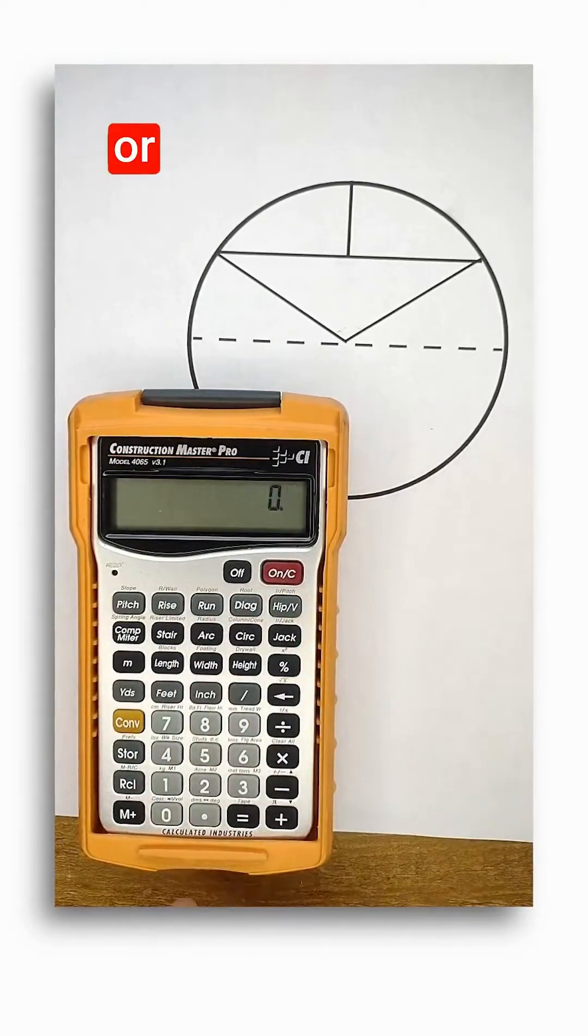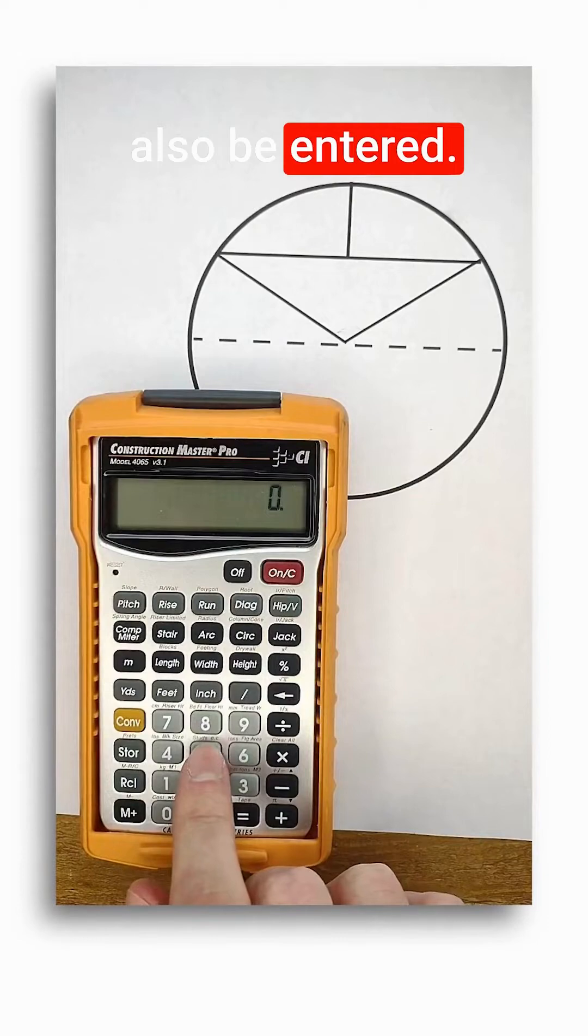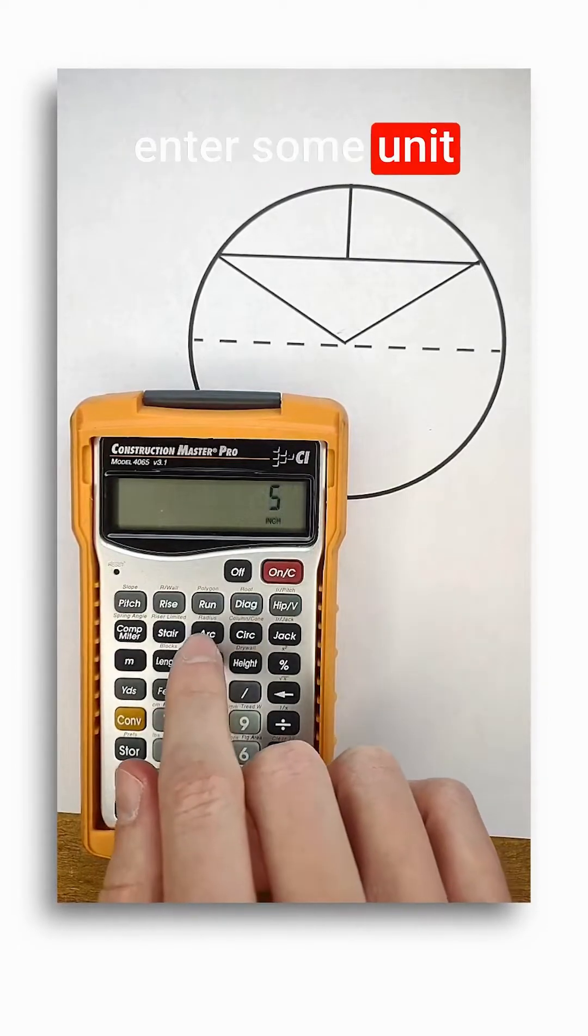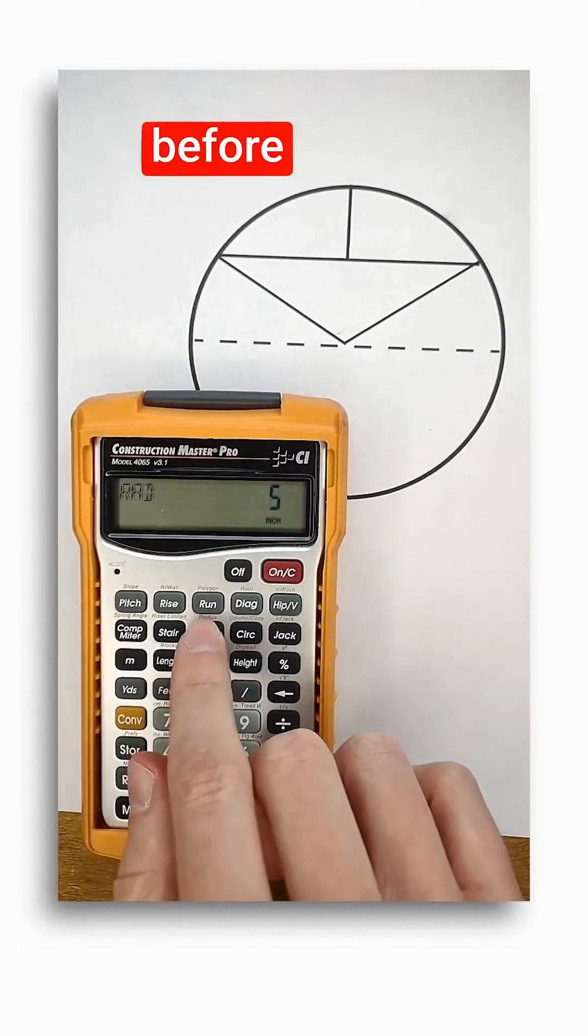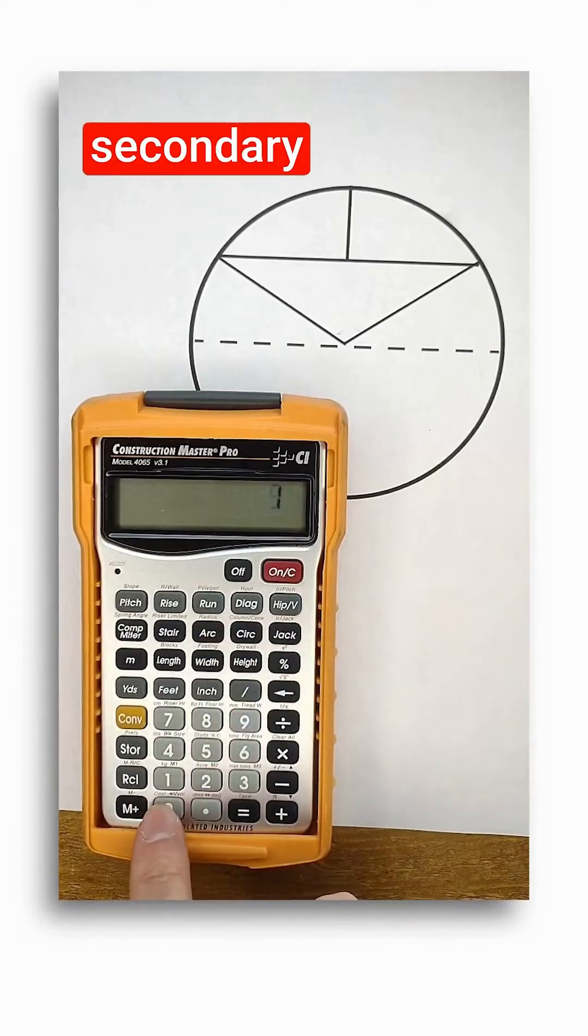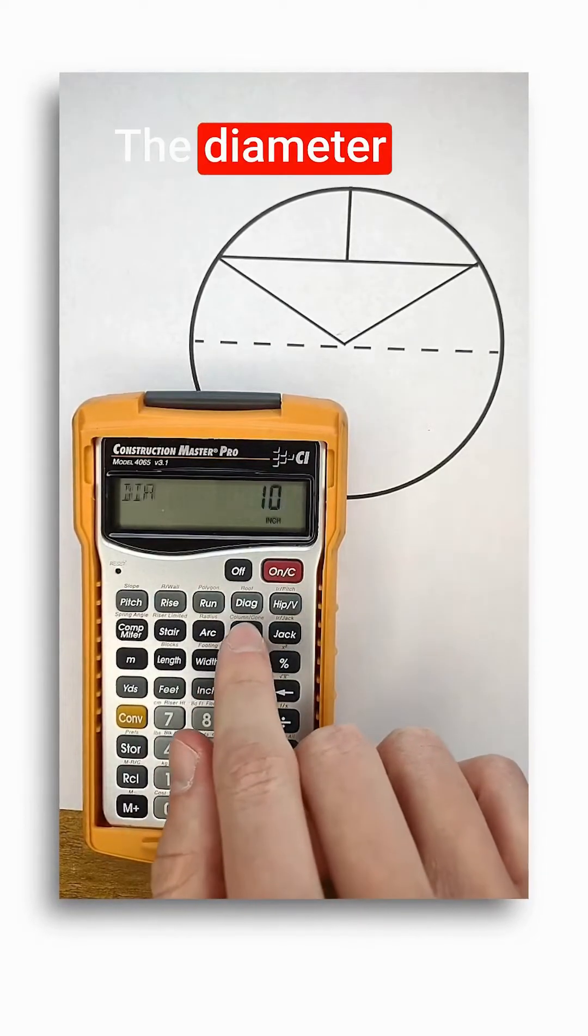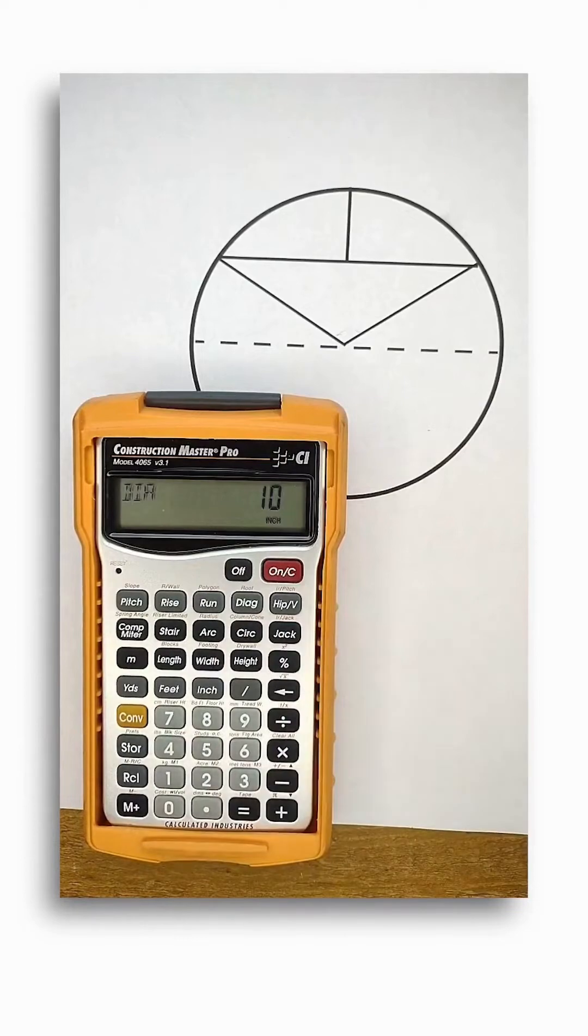Either the radius or diameter could also be entered. For radius, I would enter some unit of length and then push convert before the arc button to apply the secondary function. The diameter just needs a length and then push the circle button.